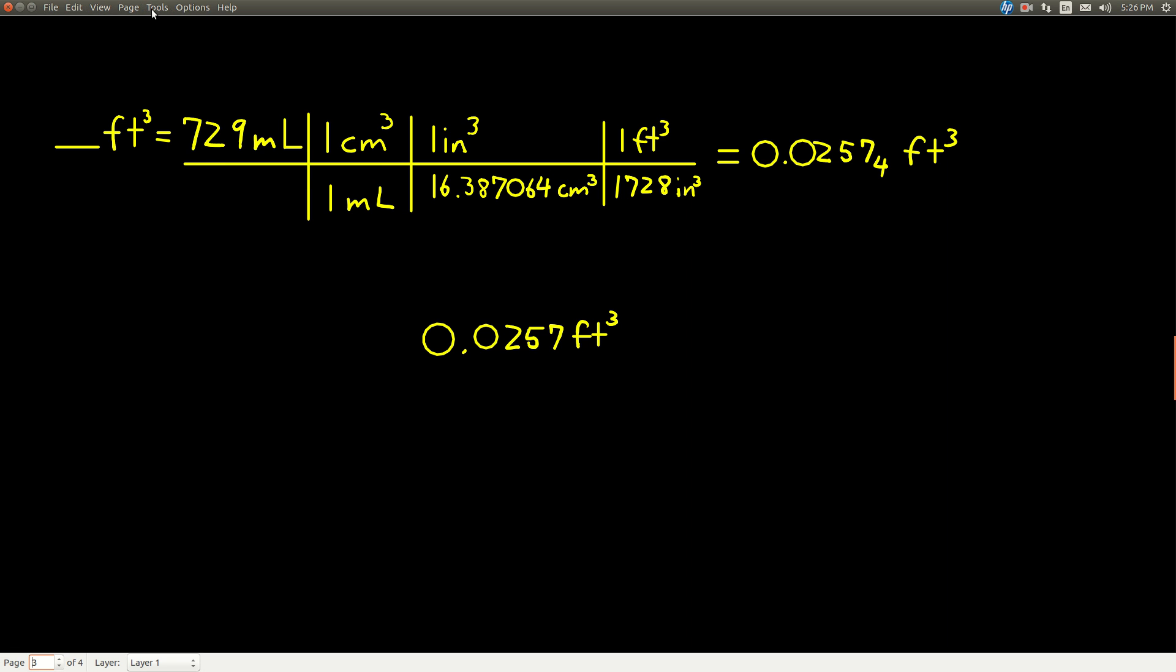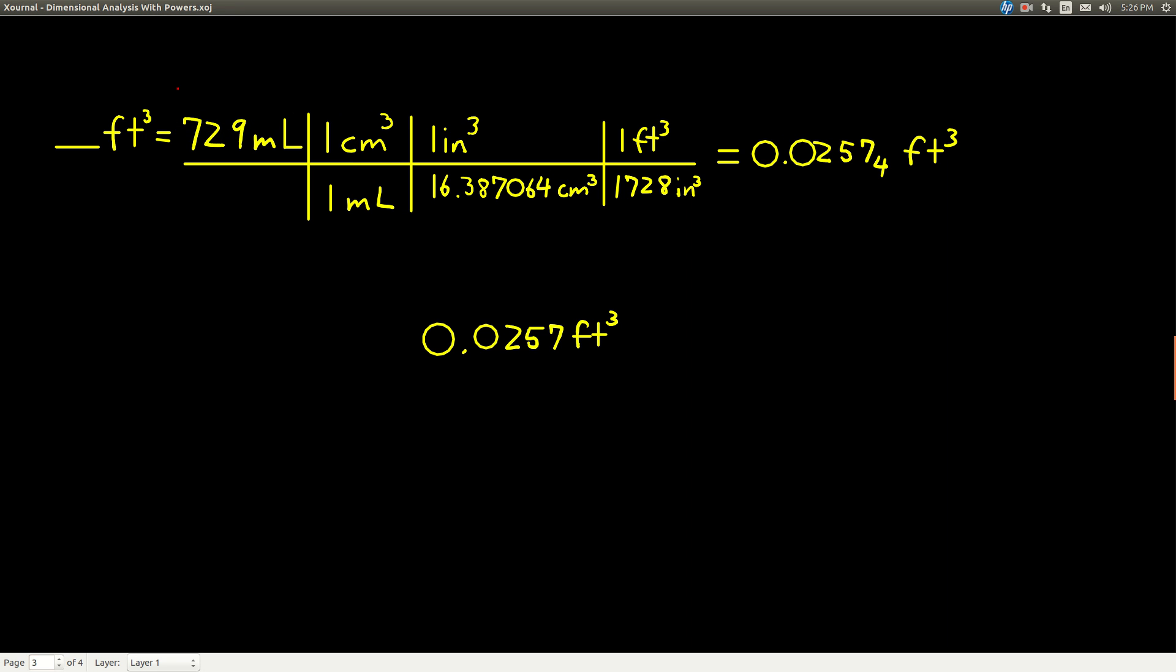We have milliliters to start with. So we take 1 cm³ = 1 mL. Put the milliliters in the denominator so that it cancels. Then we need centimeters cubed to cancel, so we use that conversion between inches cubed and centimeters cubed. Centimeters cubed cancels. And then we cancel out the inches cubed by putting the 1728 on the bottom, and we're left with units of cubic feet, which is what we want.